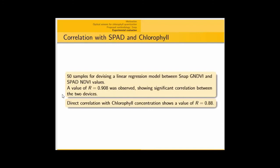We found that the alternative, which is at least 40 times more costlier than our device, has a correlation of 0.908, and similarly, with chlorophyll concentration, our device has a correlation of 0.88. So, even though we are 40 times cheaper, we still have essentially the same accuracy.